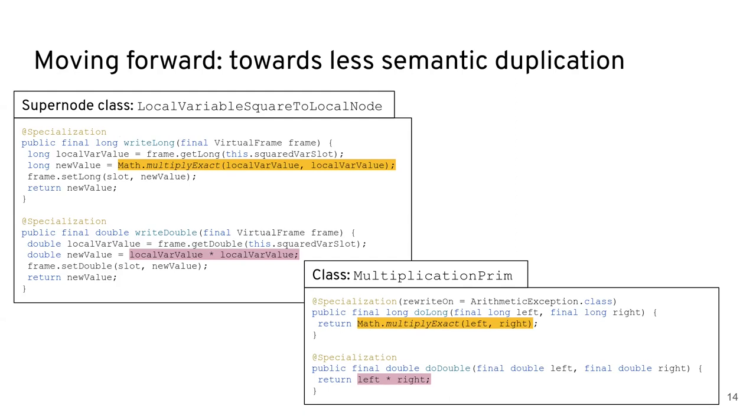But as a rule of thumb, semantic duplication isn't exactly a good thing to have in your system, due to it making them harder to maintain, since if we ever modify the multiplication primitive, for example, and handle multiplication in a different way, then we actually have to modify it as well in our super node, for them not to have different behaviors, and so for them not to be bugs in our system. So we want to remove semantic duplication.